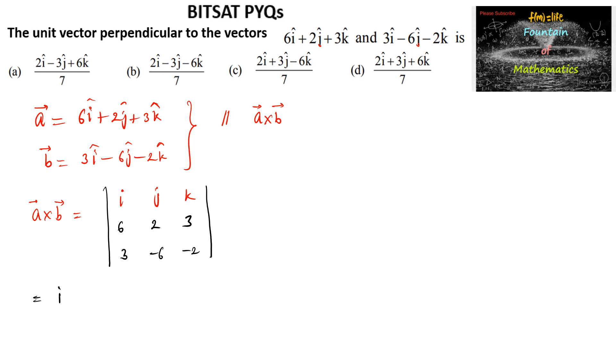Which is equal to i times 2 into minus 2 is minus 4 plus 3 times 6 is 18. Minus j times 6 into minus 2 minus 12 and minus 9, plus k times 6 into minus 6 is minus 36 and minus 6.